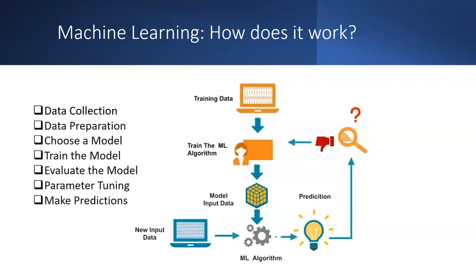Before putting data into a machine learning model, the steps include: data collection, data preparation, choosing a model appropriate for quantitative or qualitative data, training the model on 60–70% of the data, evaluating the model for underfitting and overfitting, parameter tuning, and then making predictions accordingly.